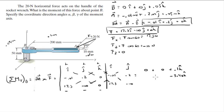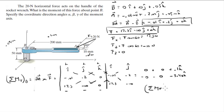Computing the cross product: the positive diagonal terms and negative diagonal terms simplify. The i and j terms come out to 0 since the z components are zero. You can see that the moment that F creates about B is negative 3.46K Newton-meters.